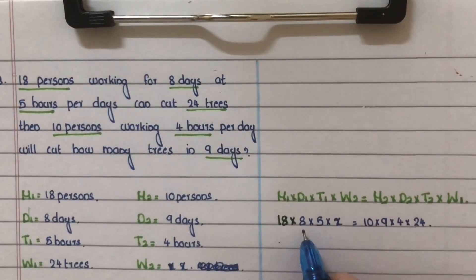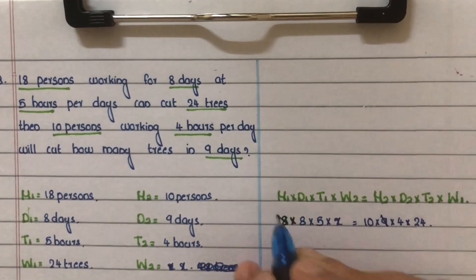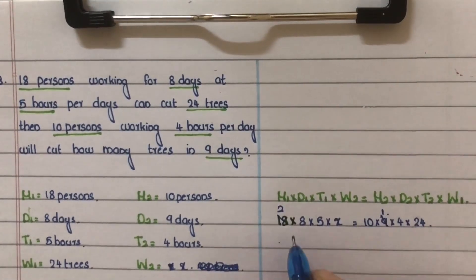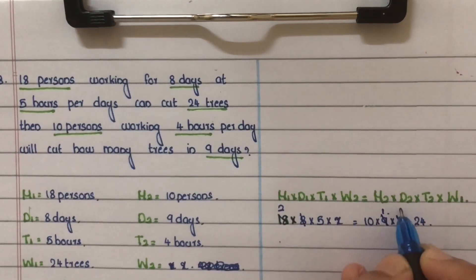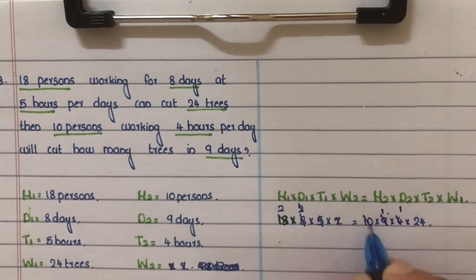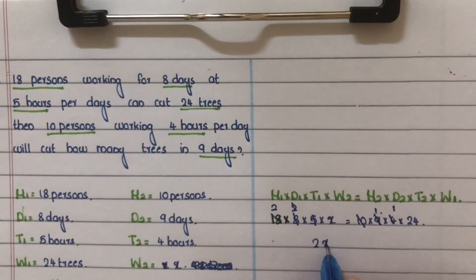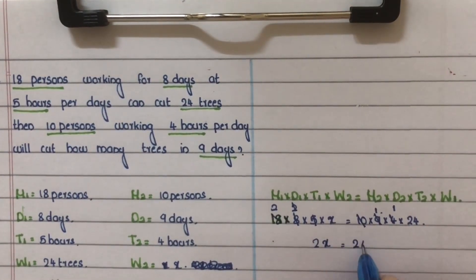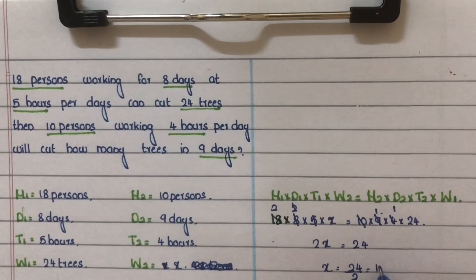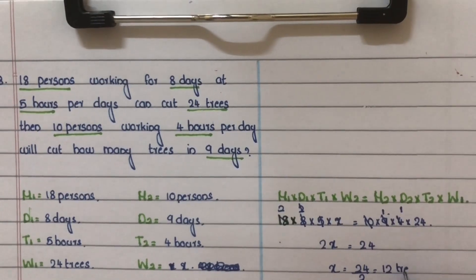Now cancel common factors. 18 and 9 give 2 and 1. 8 and 4 give 1 and 2. 5 into 2 gives 10. So 2x = 24, therefore x = 24 / 2 = 12 trees.